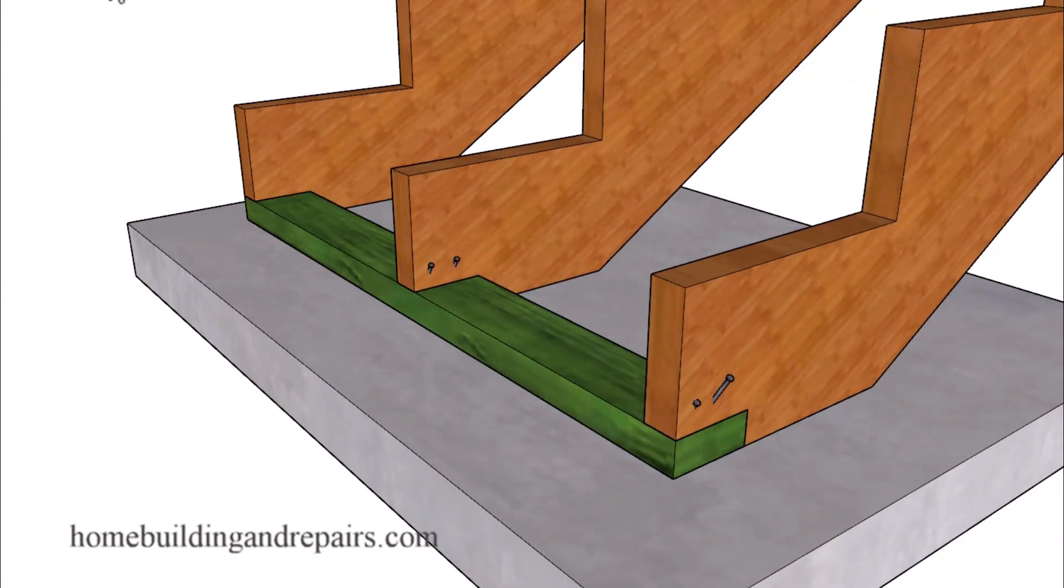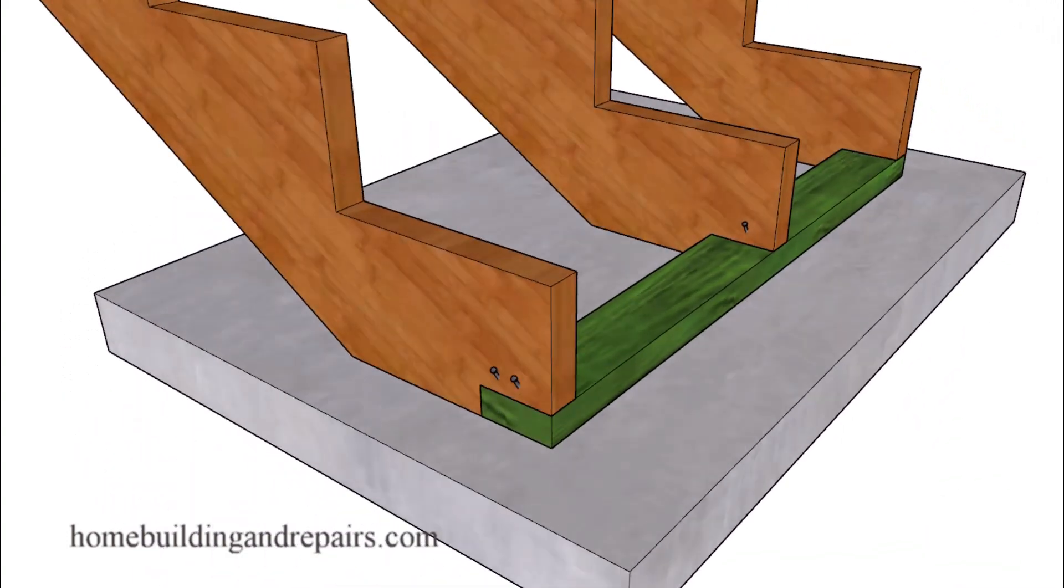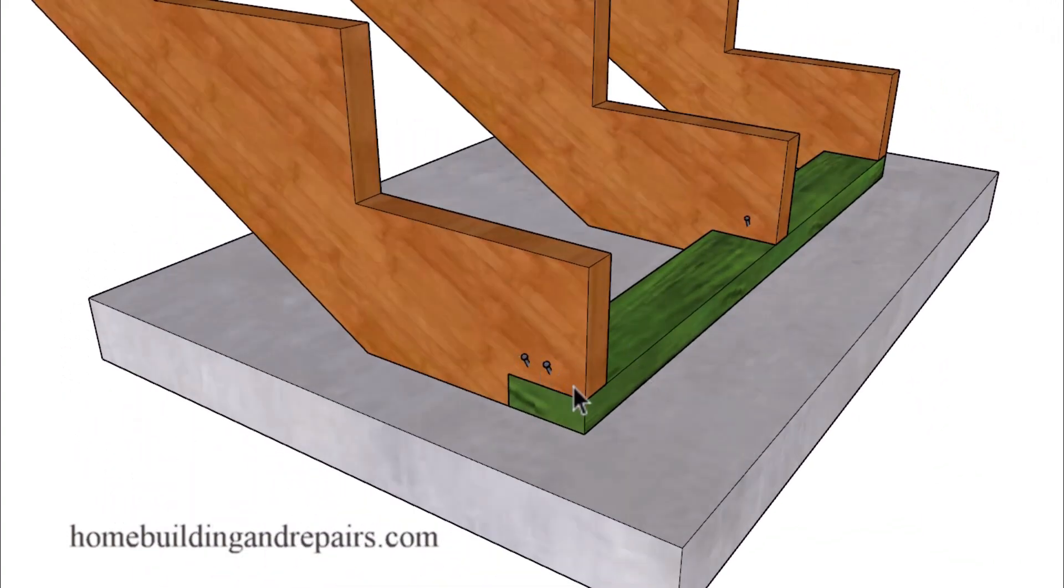And if you look closely, you can see that you can only nail the stringers at the front here. All of this right here will be loose and not securely fastened to the floor. And how do we fix it?